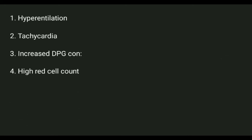The fourth change is a high red cell count. In hypoxic conditions, an enzyme acts upon plasma globally and converts it into a hormone called erythropoietin, which stimulates the formation of erythrocytes, thereby increasing RBC numbers.